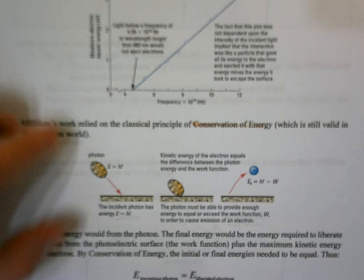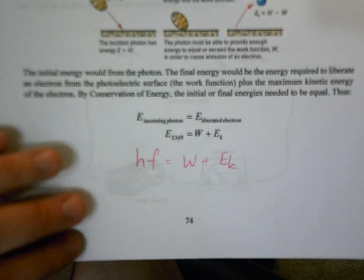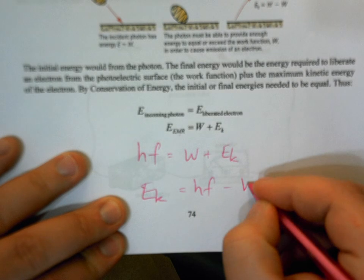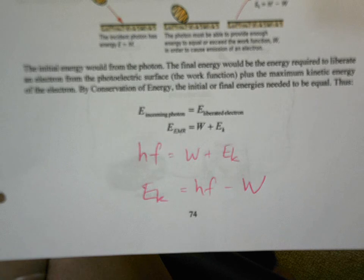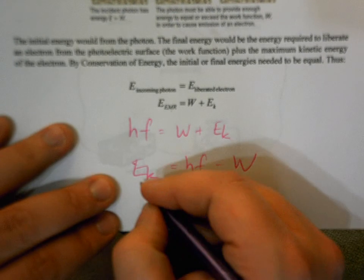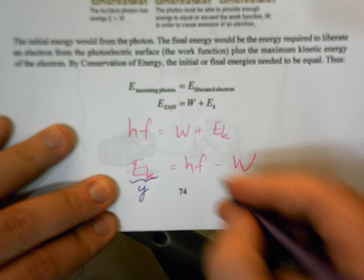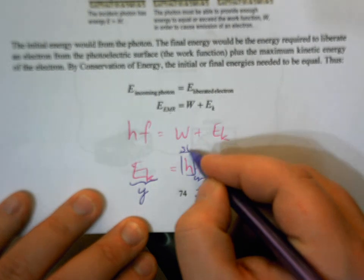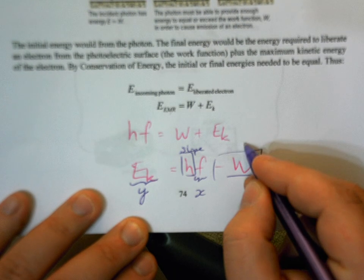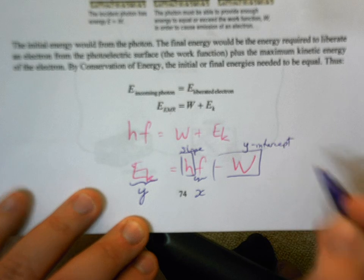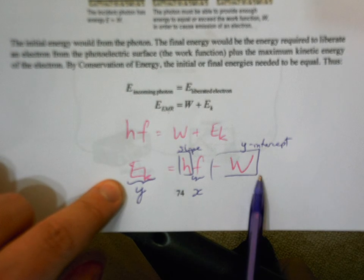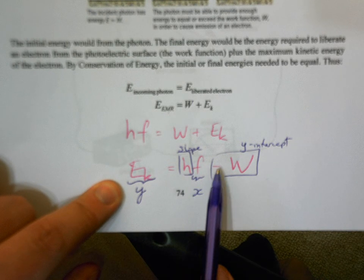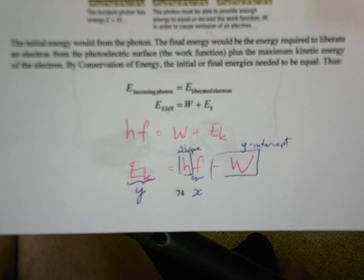We notice in Millikan's plot he has energy as a function of frequency, so we should solve for kinetic energy: Ek = hf − w. This looks very similar to y = mx + b. We're plotting kinetic energy on the y-axis and frequency on the x-axis. That tells us h must be the slope and negative w must be the y-intercept — Planck's constant times frequency minus the work function of the metal.